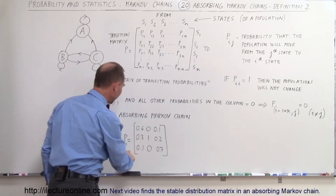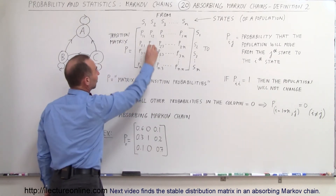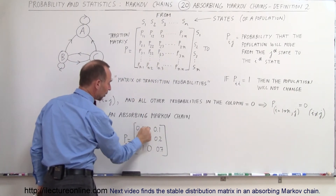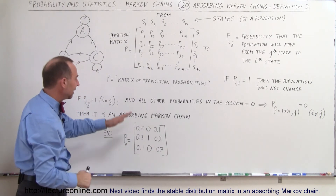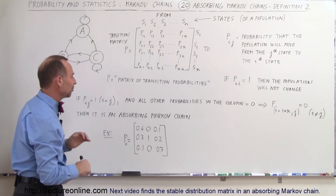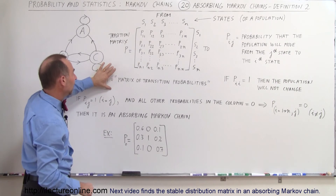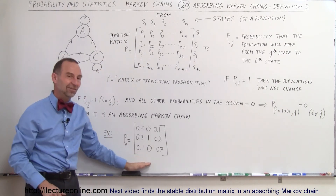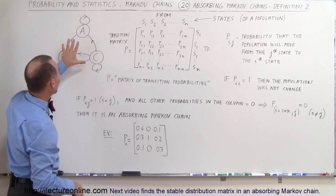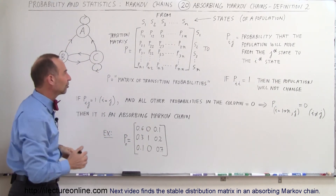Here, if we have an example where this element equals one — notice this is the P22 element in the three-by-three matrix — and all the other elements in that column are equal to zero, then this is most definitely an absorbing Markov chain. This is mathematically describing the definition of an absorbing Markov chain, but it's easy to see what it means in the transition matrix, and what it represents graphically. It's a lot easier to look at those two and say, 'I can see that must be an absorbing Markov chain.'